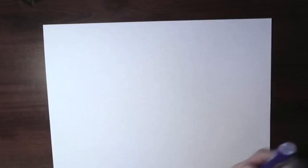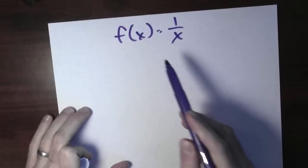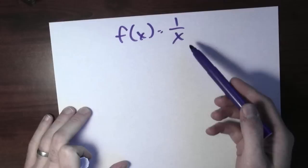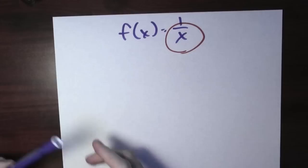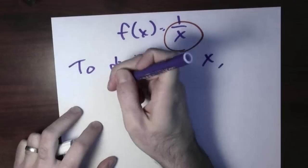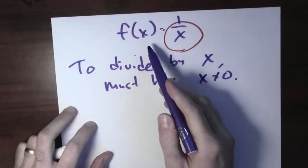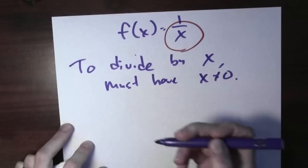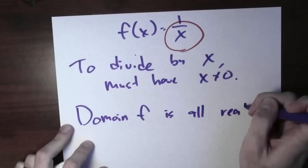Suppose I've got a function f of x equals 1 over x. That's a function given by a rule — it takes an input x and produces the output 1 over x; it assigns the number x the number 1 over x. But this rule doesn't always make sense, right? I'm dividing by x, and to divide by x, I must have that x is not 0. Not permitted to divide by 0. So I can plug in any number for x except for 0 — that's when this rule makes sense. The domain of f is all real numbers except 0.